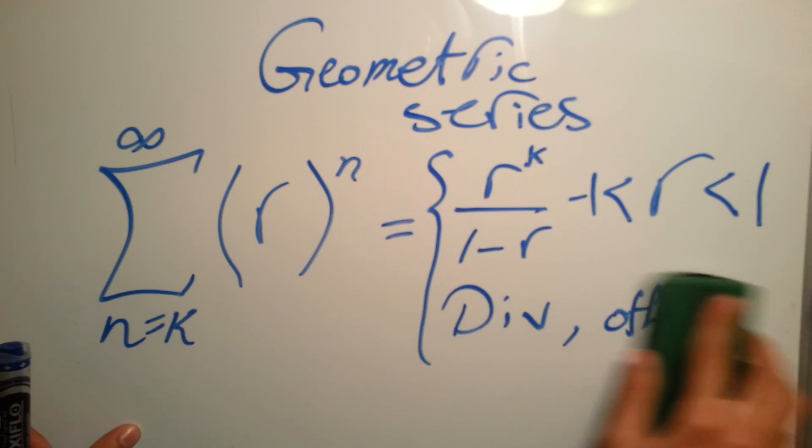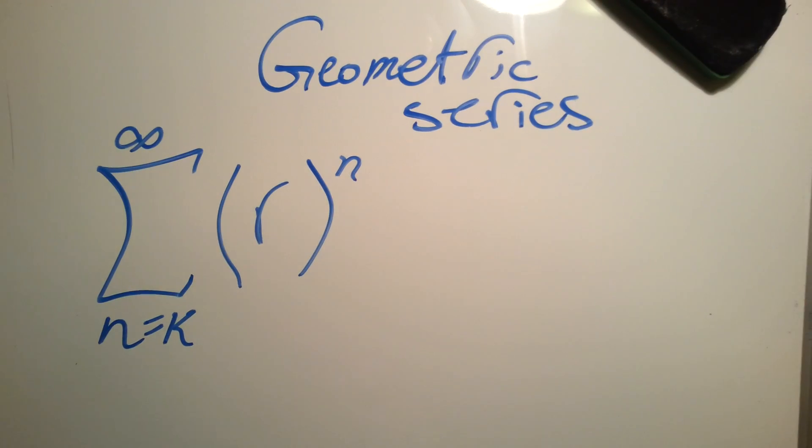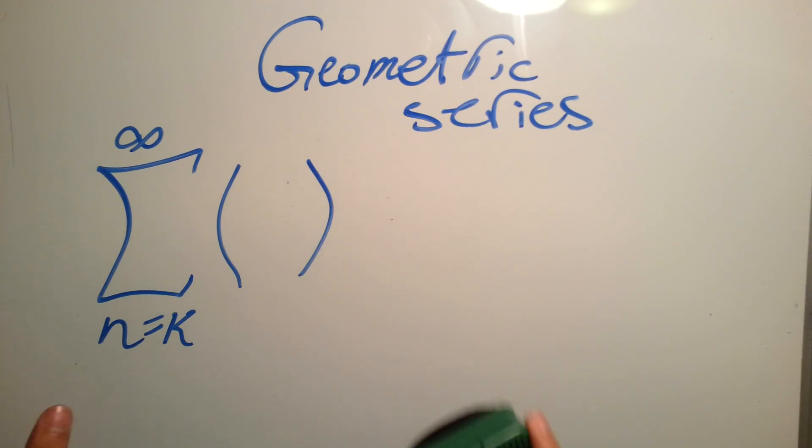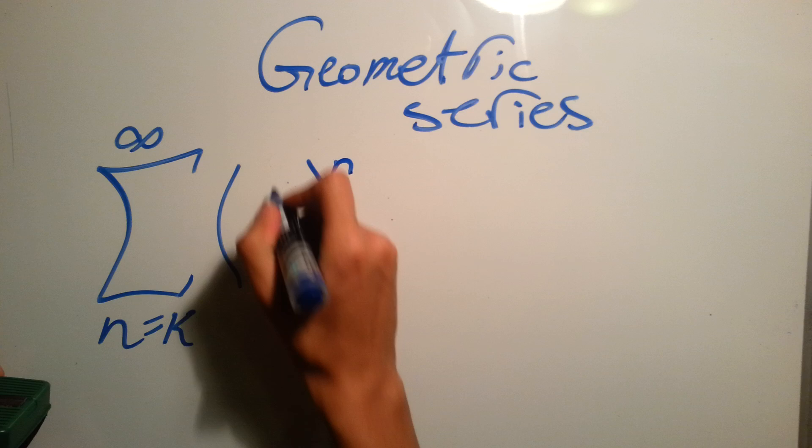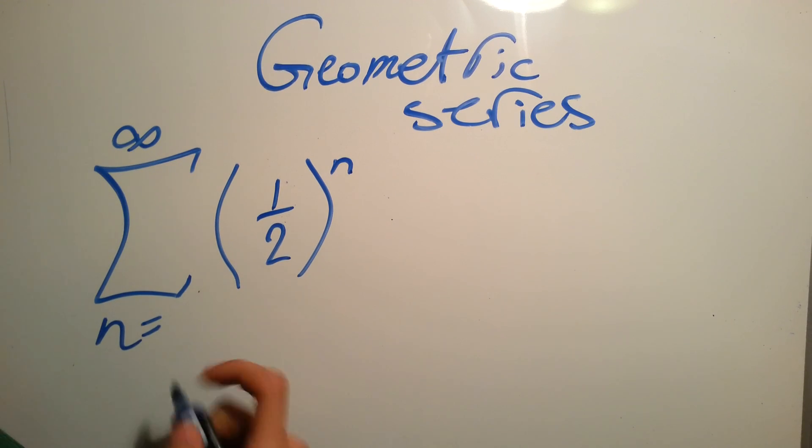So in our case, we have instead of r, we have 1/2. And instead of k, we have zero.